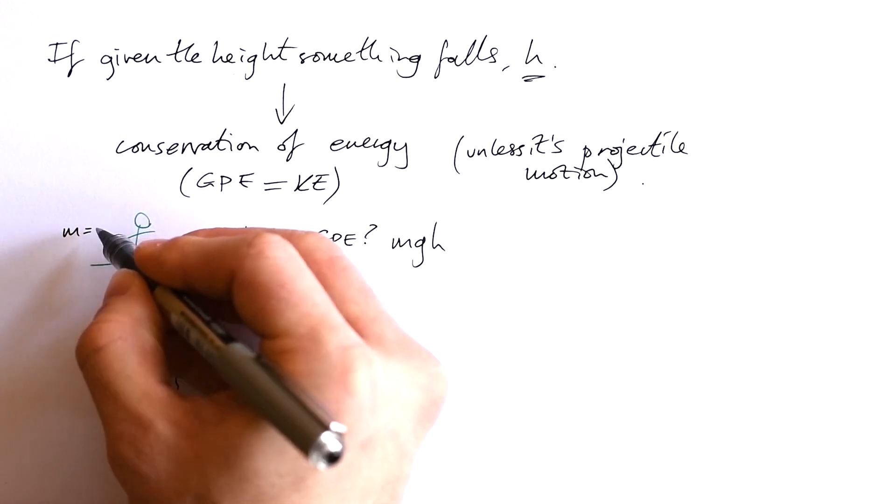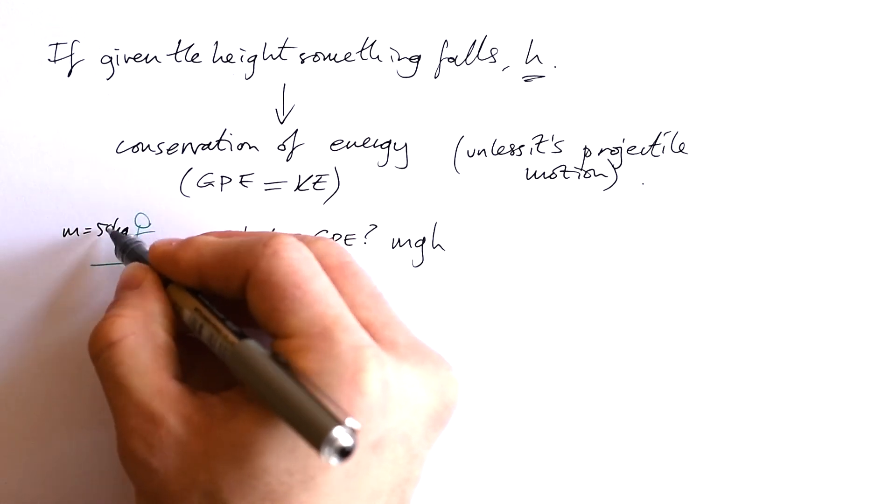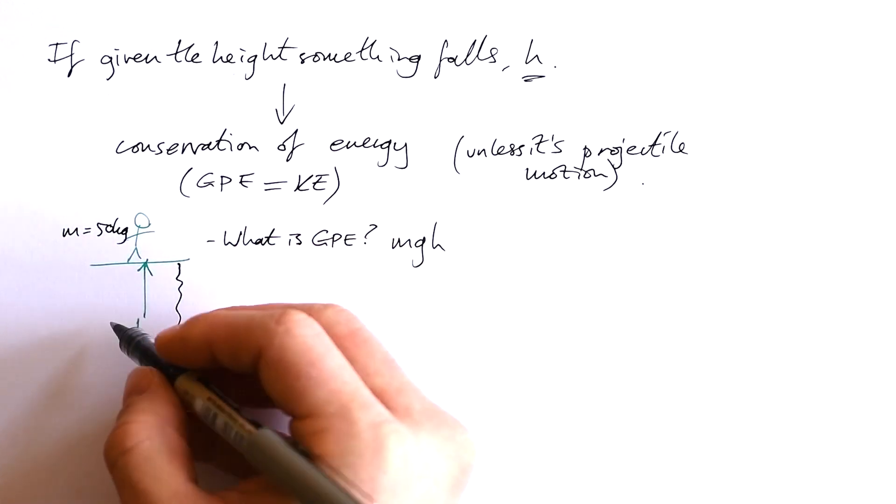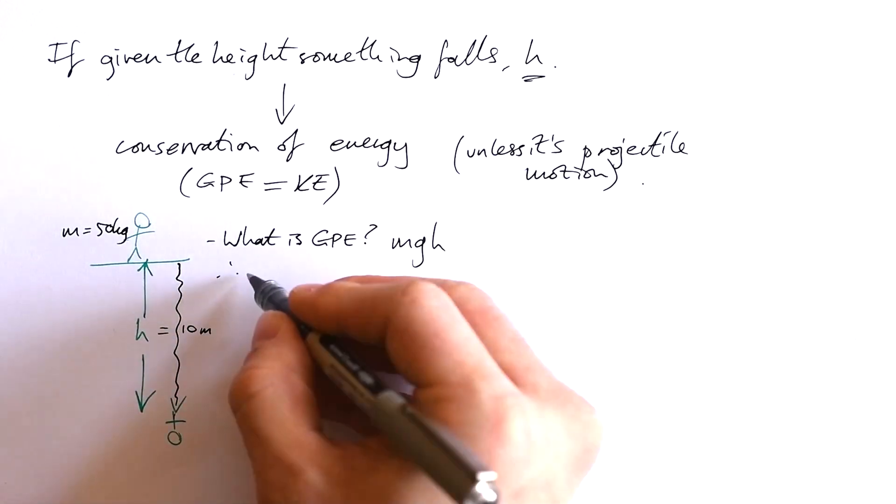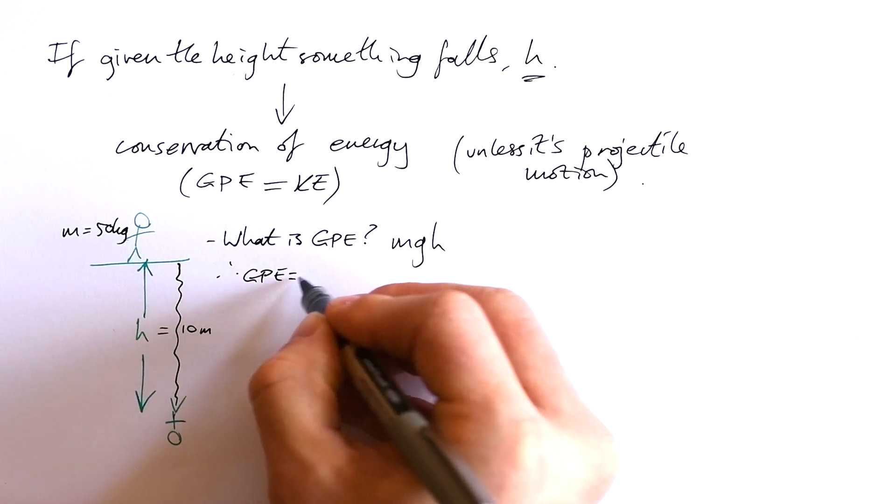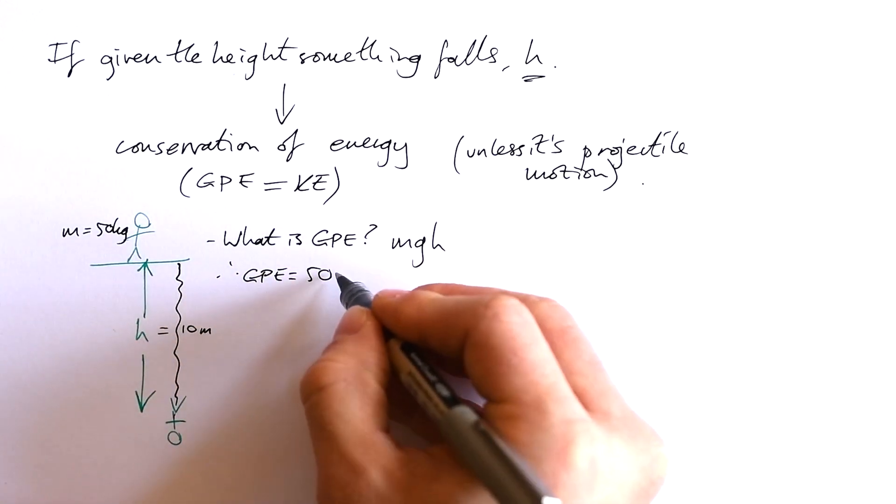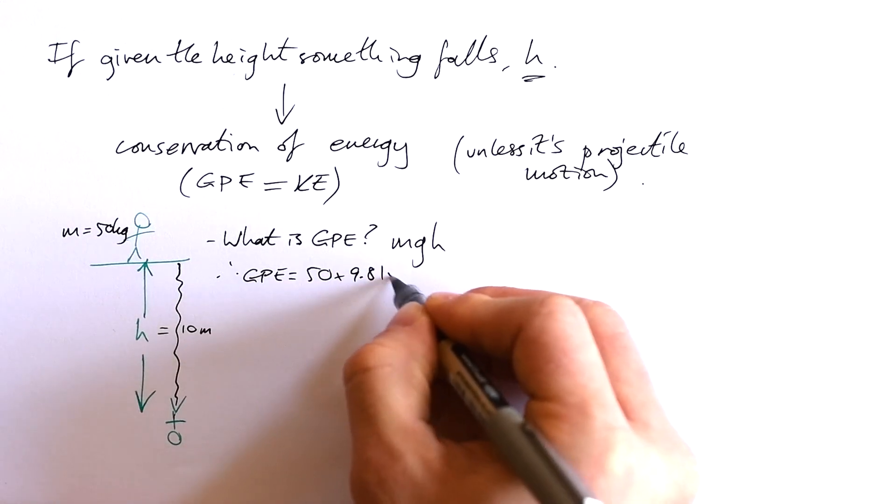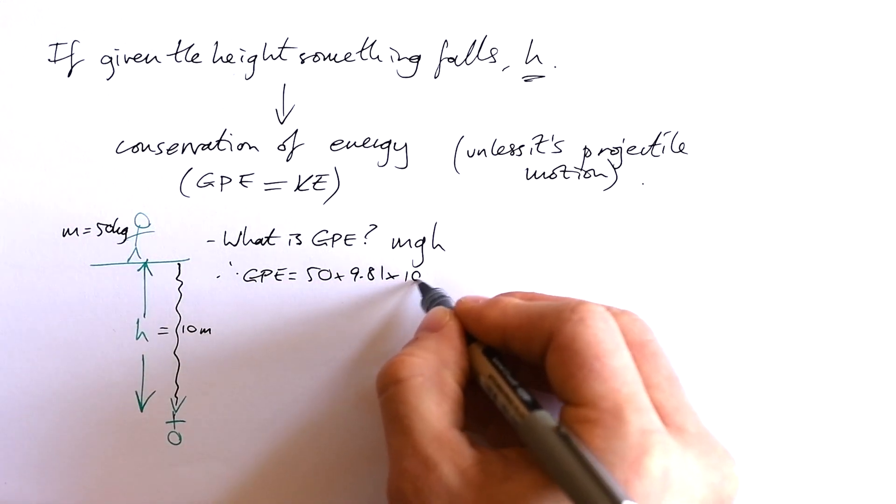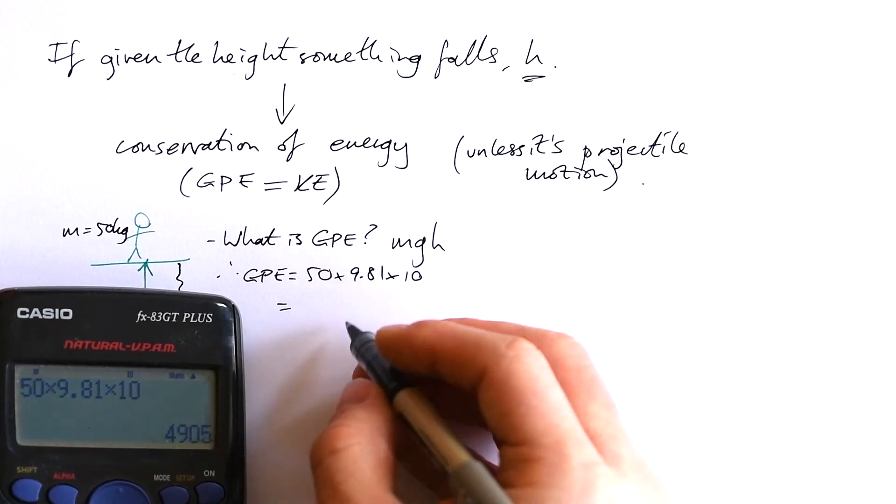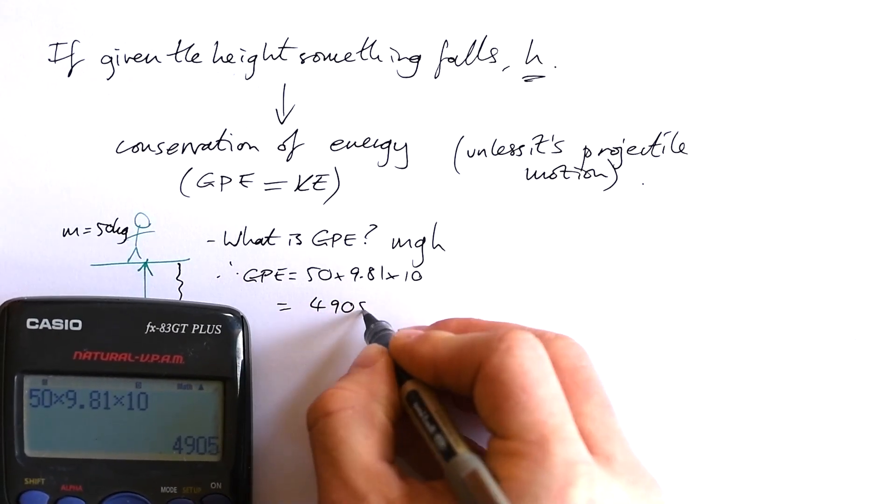So let's say that this person has a mass of 50 kilograms and they're falling a height of 10 meters. Therefore GPE is going to be equal to M, 50, times G, 9.81, times height, that's 10. That's 4,905 joules.